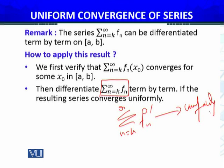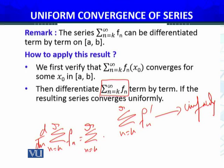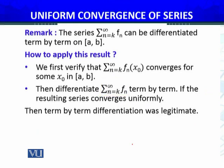Then what will happen? Summation n equals k to infinity fn, d/dx equals summation n equals k to infinity d/dx fn(x). Here I'll write prime, because d/dx I've written here. So these two operations can be interchanged. Then term-by-term differentiation is legitimate. We can perform term-by-term differentiation.